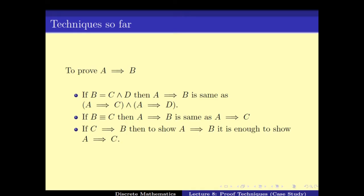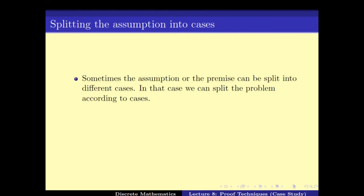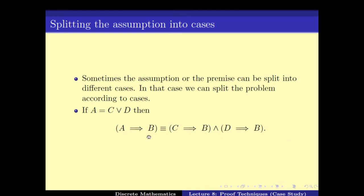Now in the rest of this video I will introduce a new way of splitting the problem. This depends on splitting according to the assumptions. Sometimes the assumptions can be split into different cases, and in that case we can split the problem into smaller sub-problems. For example, if we have to prove A implies B, and A is C OR D, then A implies B is the same as saying C implies B AND D implies B. Please prove this for yourself using propositional logic.